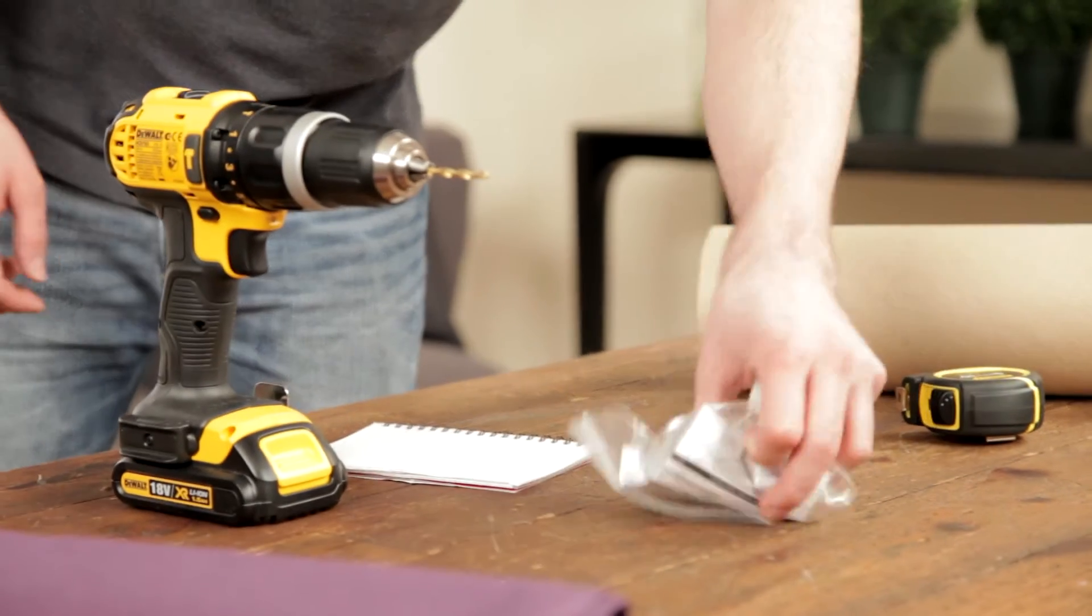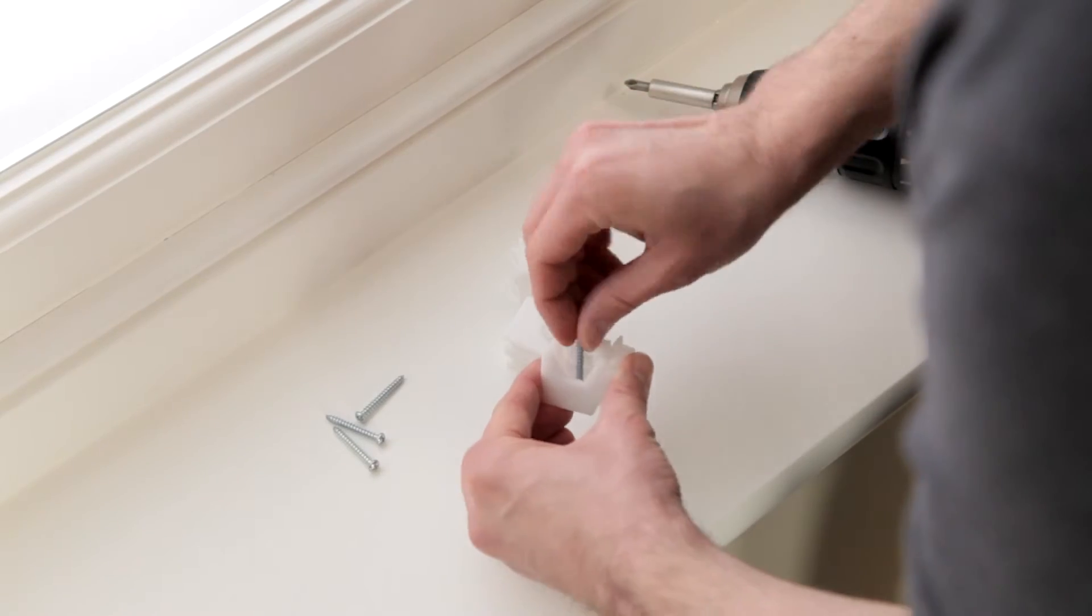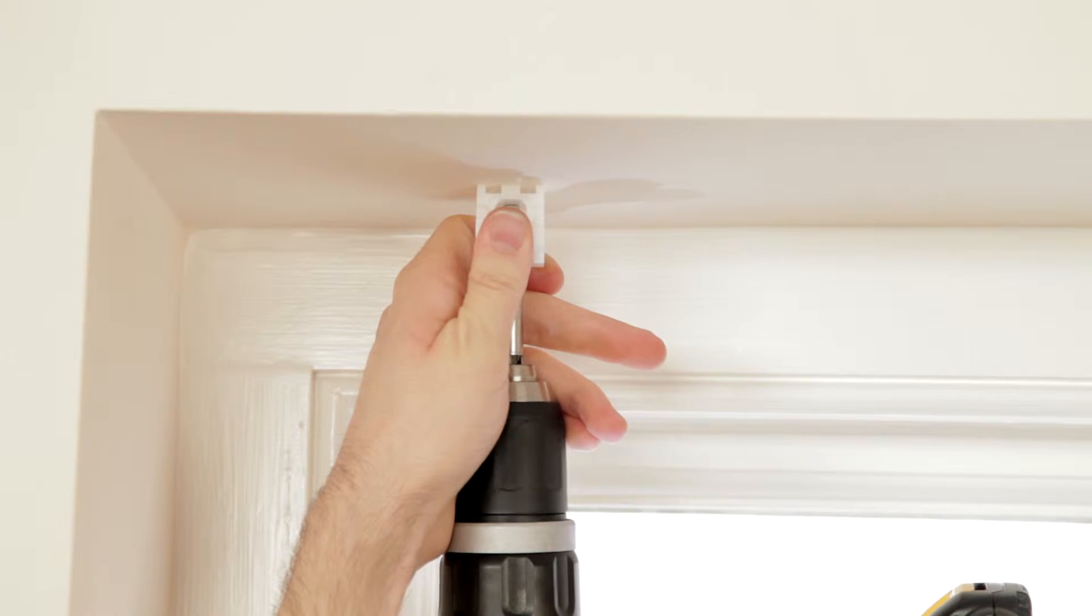The shorter screws are wood screws, which you'll need if attaching the blinds directly to a wooden window frame or recess. Use the raw plugs and longer screws if you are screwing the brackets into the wall.